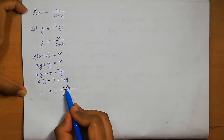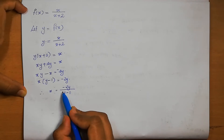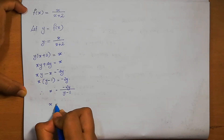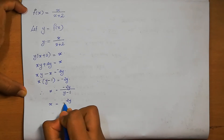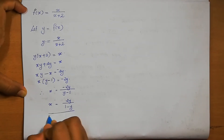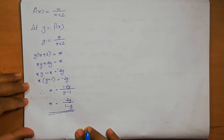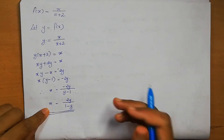To cancel the minus symbol, we take minus common from the denominator — minus and minus cancel. Therefore x = 2y/(1-y). This is the value of x. Next, we substitute the value of x back into f(x).